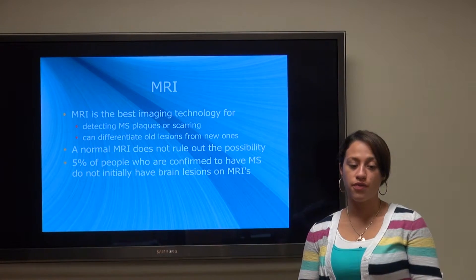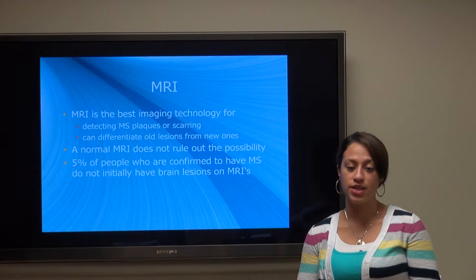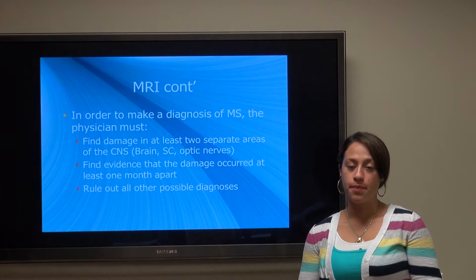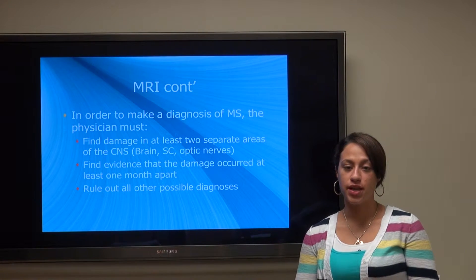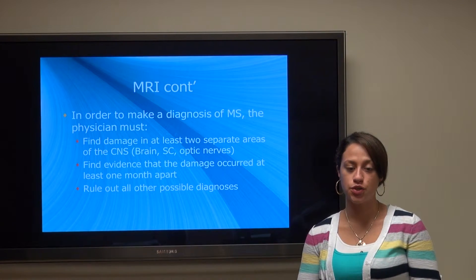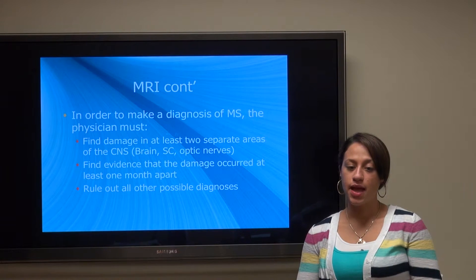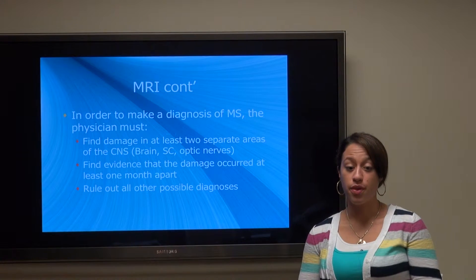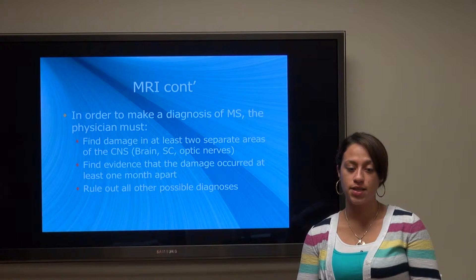Five percent of people confirmed to have MS do not initially have lesions on their MRIs. In order to make a diagnosis, the doctor must find damage in at least two separate areas of the central nervous system — brain, spinal cord, or optic nerves — find evidence that the damage occurred at least one month apart, and rule out all other possible diagnoses.